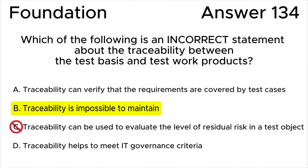Answer C is invalid because this statement is correct. Traceability can be used to evaluate the level of residual risk by assessing which requirements are covered and which are not. This information aids in understanding the potential areas of risk in the software.